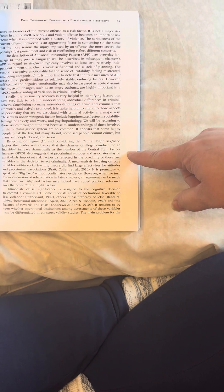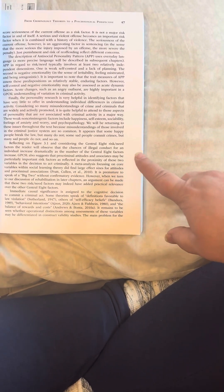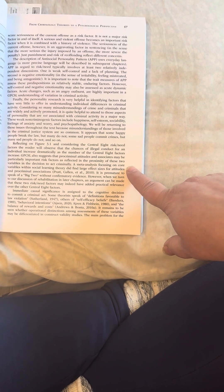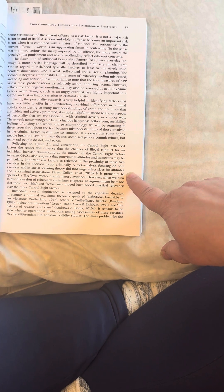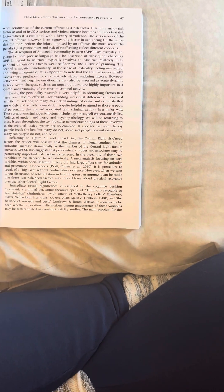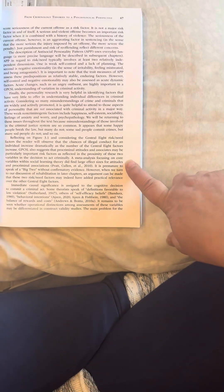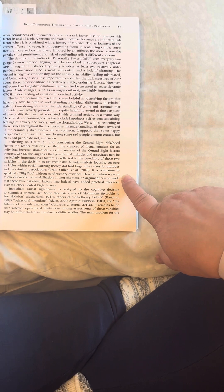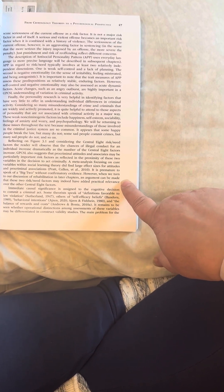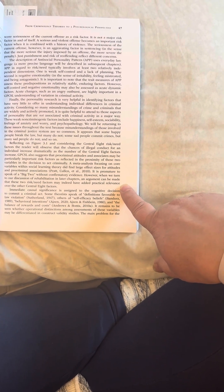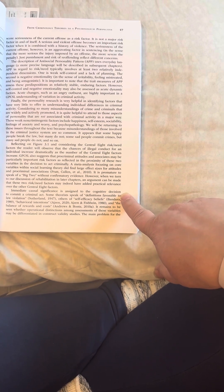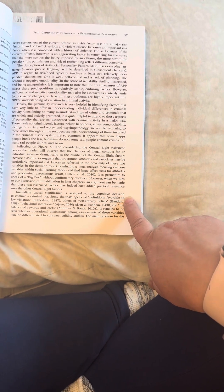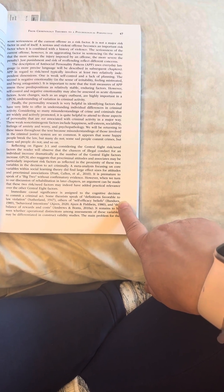GPCSL also suggests that pro-criminal attitudes and associates may be particularly important risk factors as reflected in the proximity of these two variables in the decision to act criminally. A meta-analysis focusing on the core variables within social learning theory did find large effect sizes for attitudes and pro-criminal associations. It is premature to speak of a big two without confirmatory evidence. However, when we return to our discussion of rehabilitation in later chapters, an argument can be made that these two risk-need factors may indeed have added practical relevance over the other central eight factors.